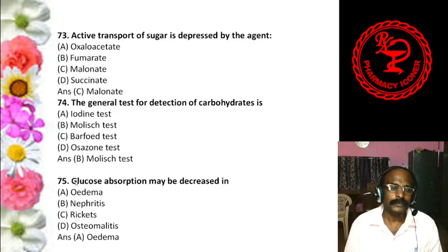Question 64: Amylose is a constituent of — Starch, Cellulose, Glycogen, or None of these. The answer is starch. When starch is hydrolyzed, it forms amylose and amylopectin.